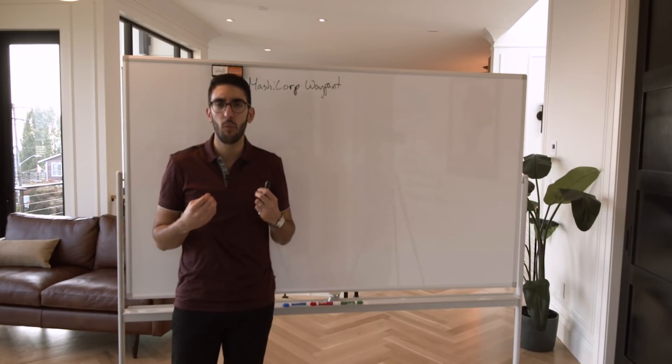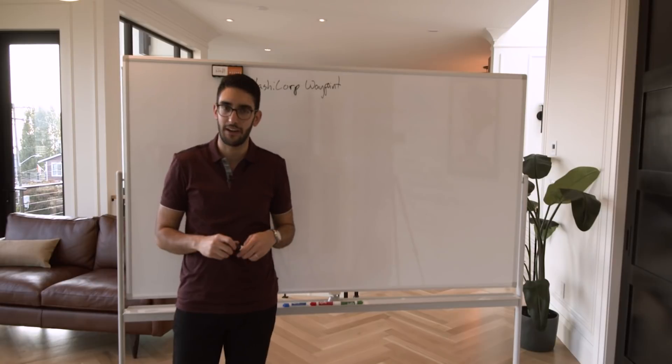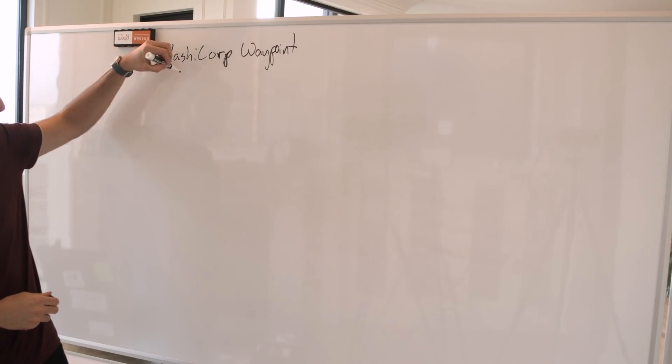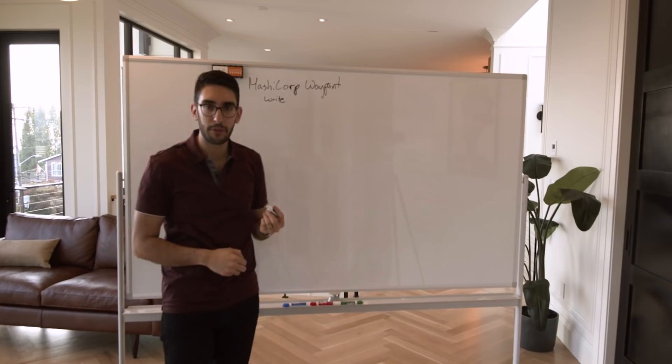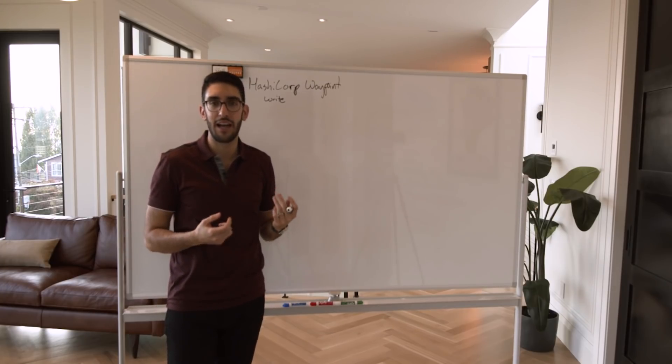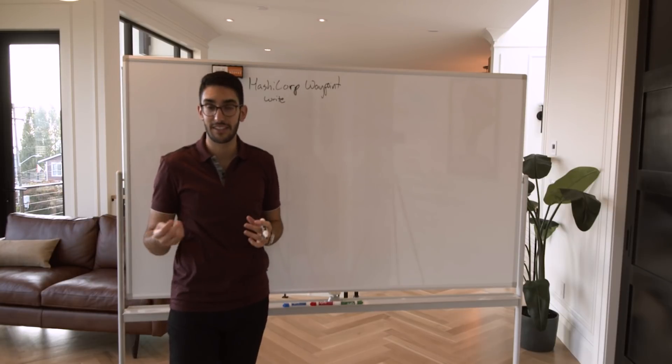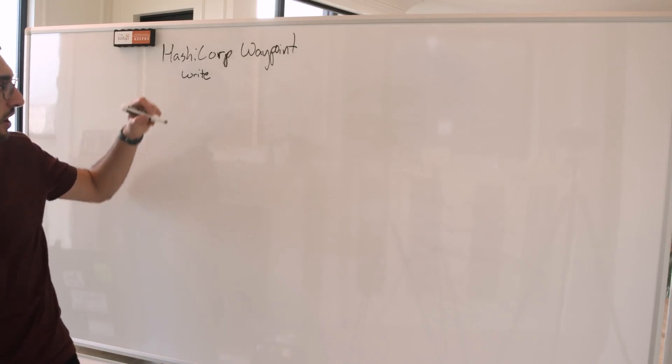So when we really step back and say, what are the core lifecycle steps that a developer really cares about? It starts with, obviously, they want to write their code. If they're writing their application, they're probably doing this in an IDE, their editor of choice - VS Code, Vim, Emacs, et cetera.